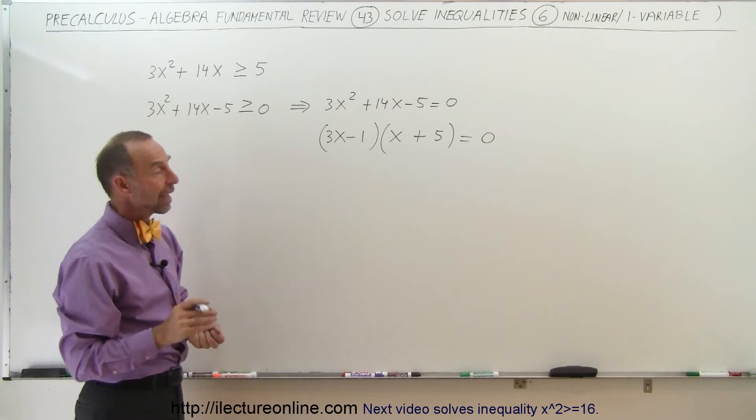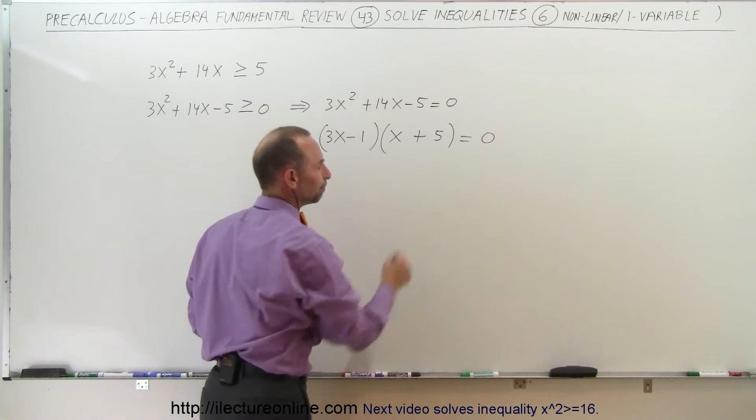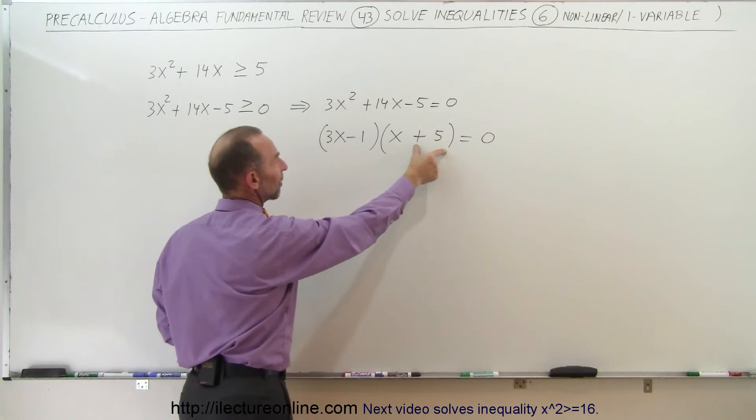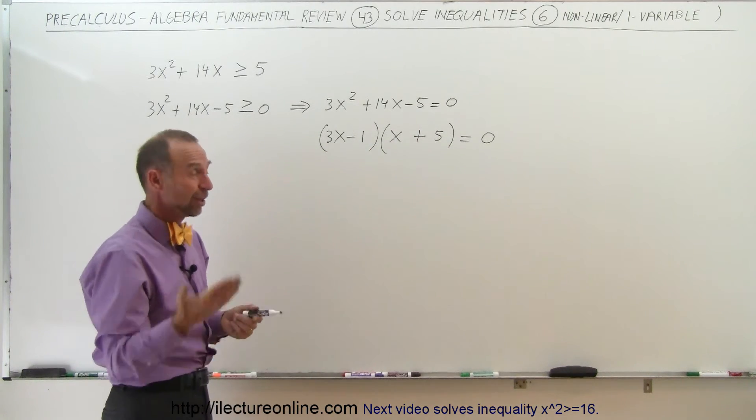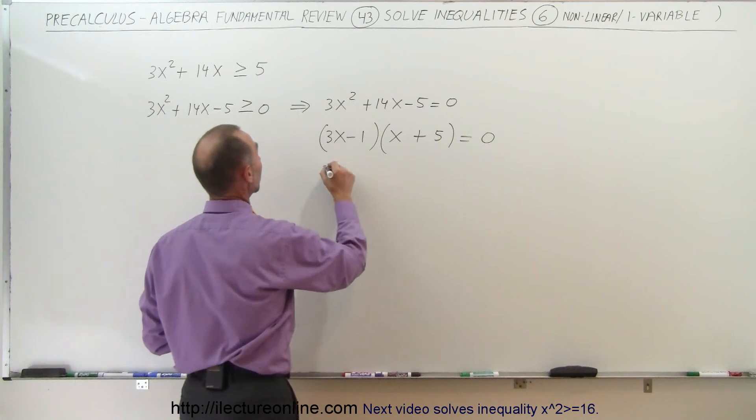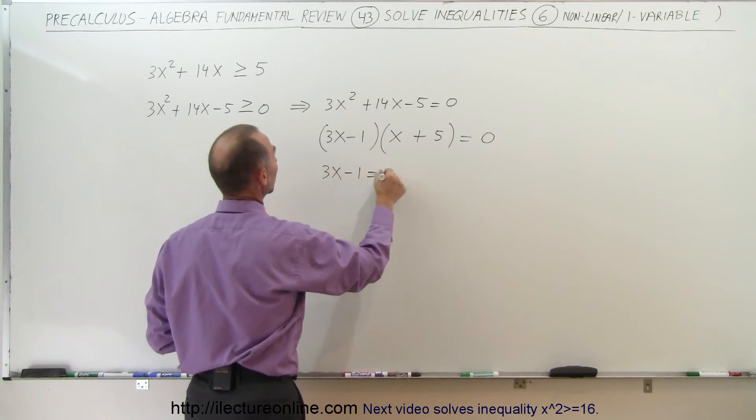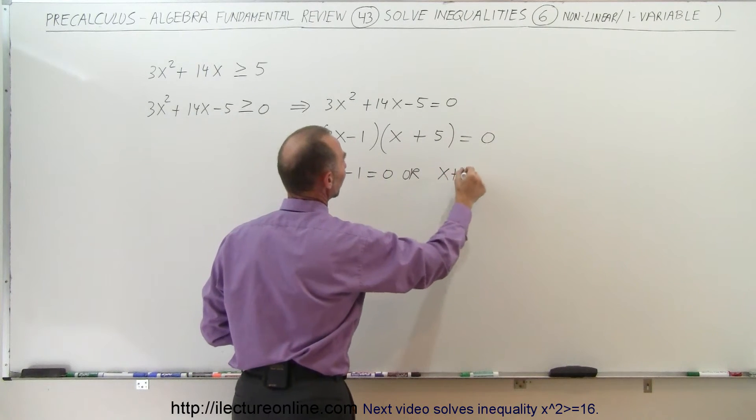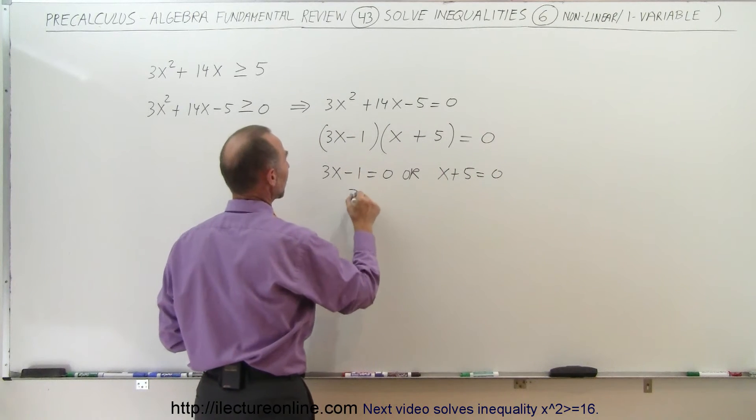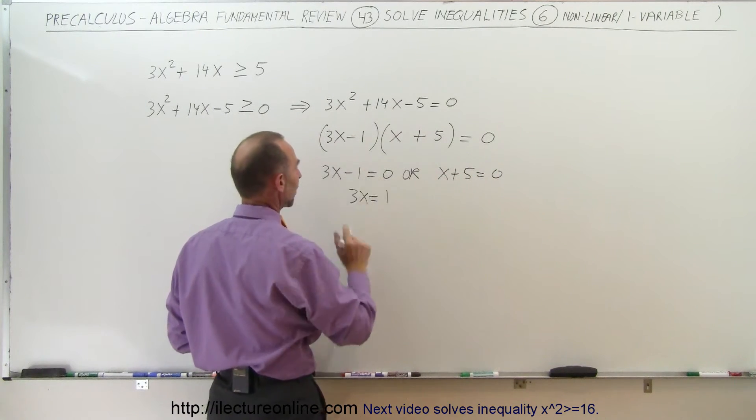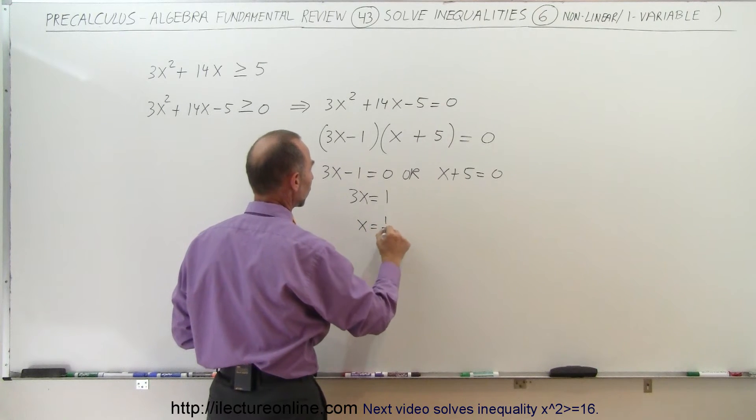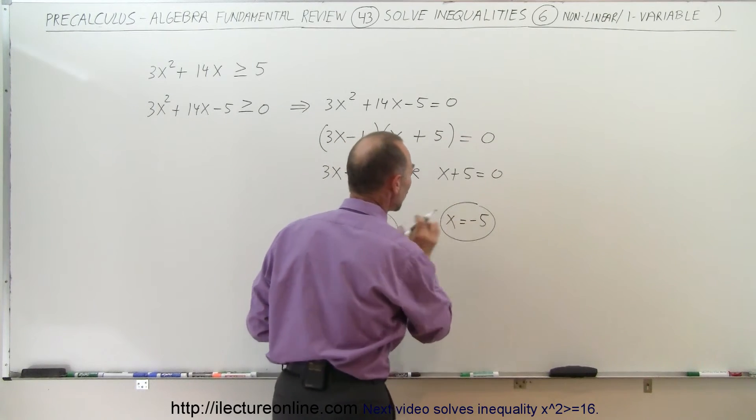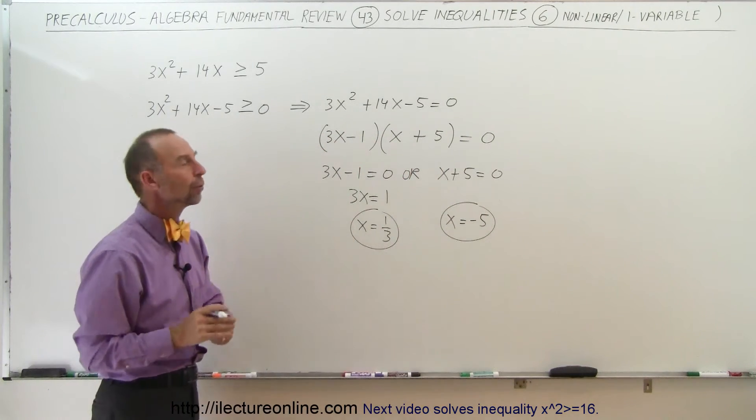Here we have two binomials multiplied together that gives us zero, which means either 3x minus 1 must be zero, or x plus 5 must be zero, because when you multiply two numbers together to get zero, one or the other has to be zero. So 3x minus 1 equals zero, or x plus 5 equals zero. In this case, we have 3x equals 1, and x is equal to 1 third, or x is equal to minus 5. Those are the two critical points, or endpoints of the region of interest.